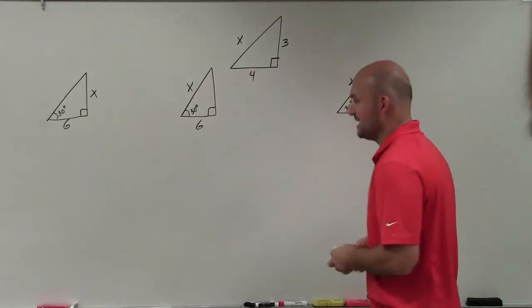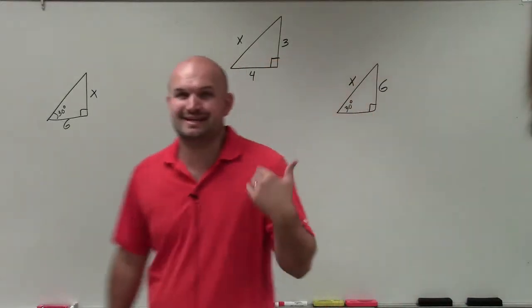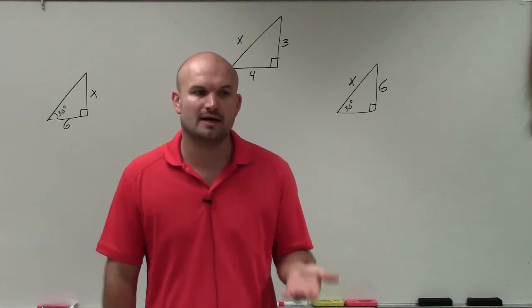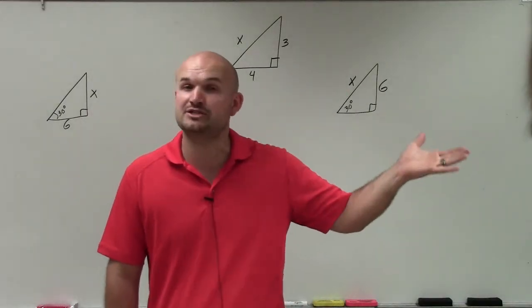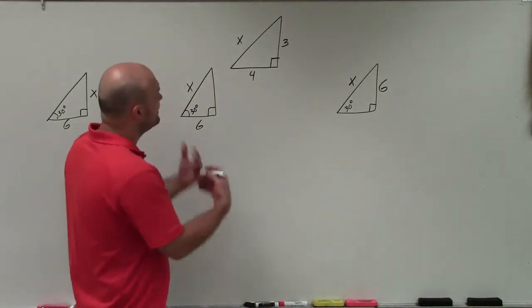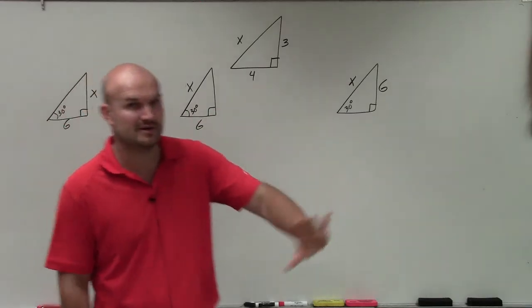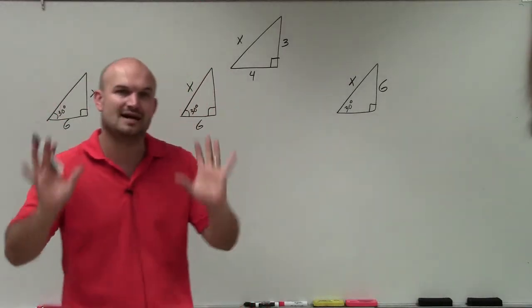To remind you, previously when we needed to find a missing side of a triangle, we usually had two sides of the triangle. These are all right triangles. That's all of our focus is on right triangles.